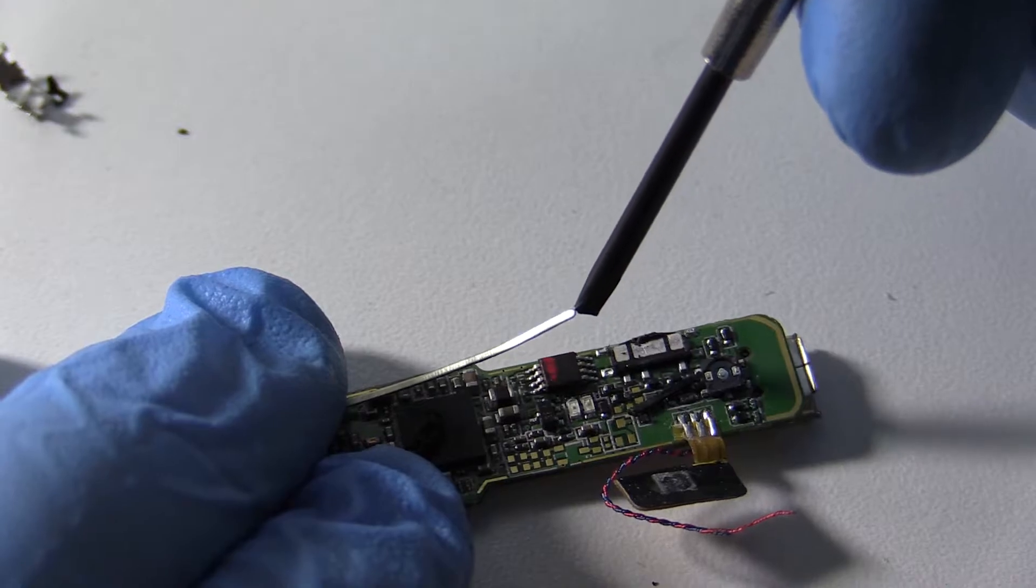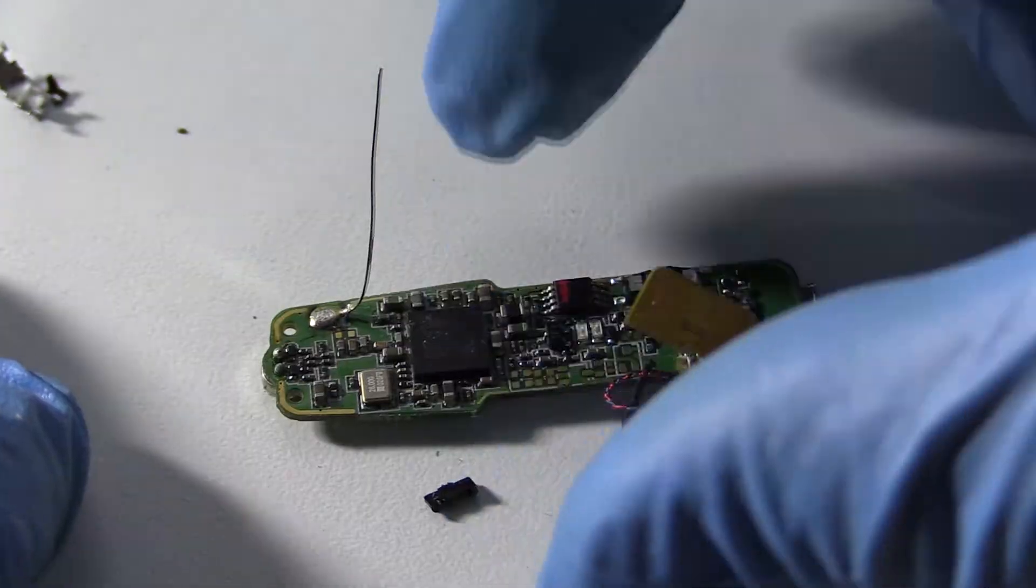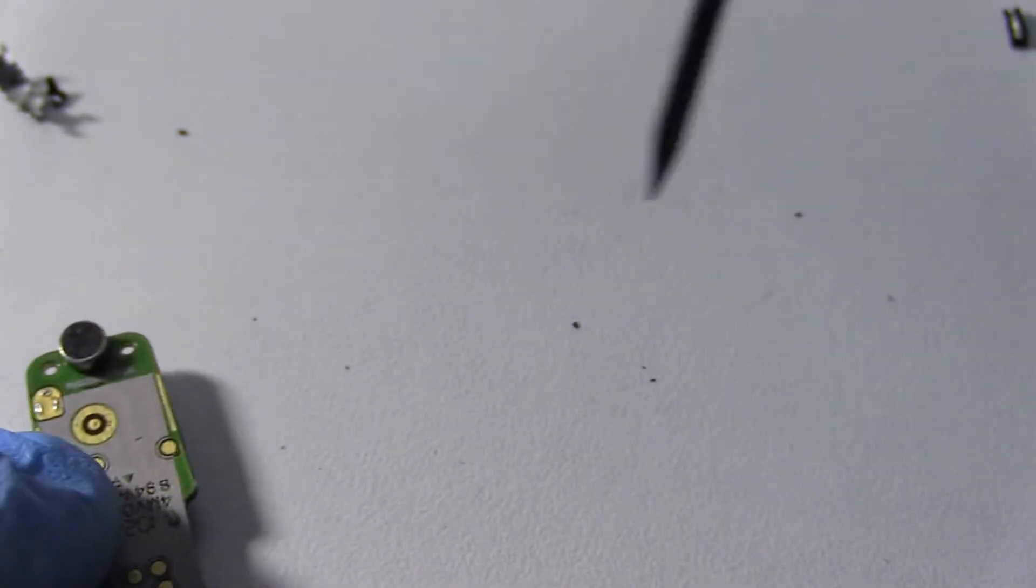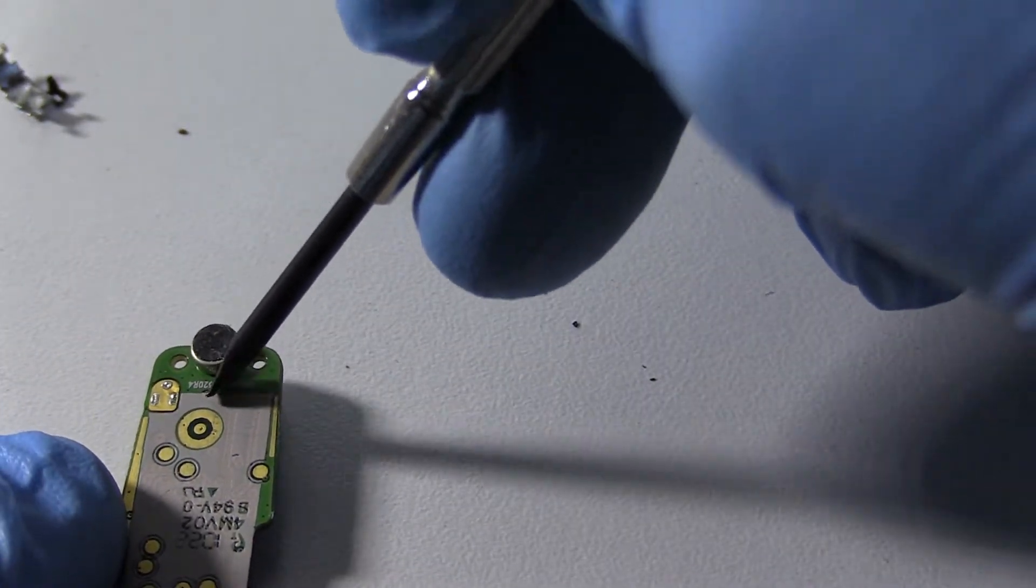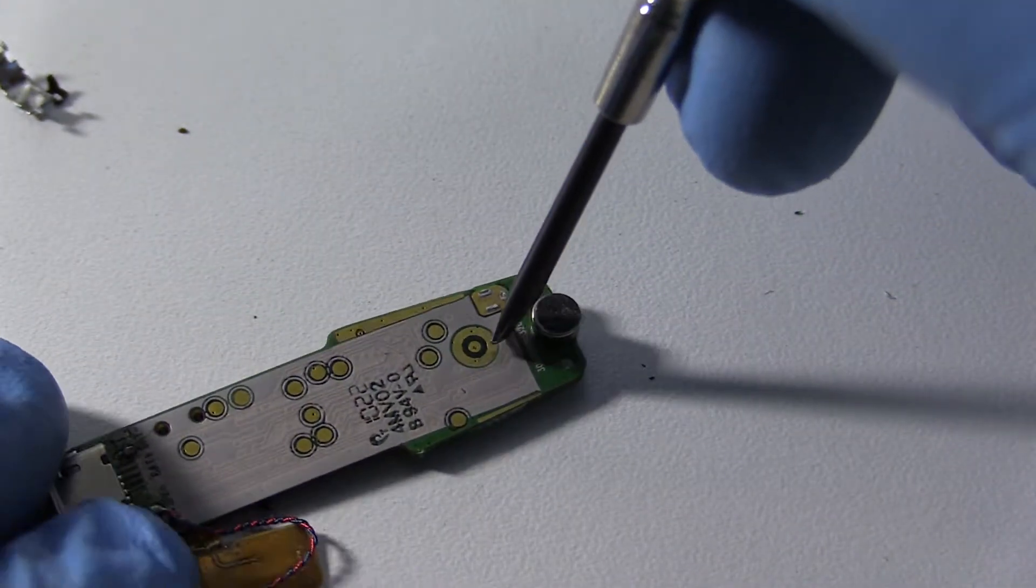Sometimes you'll find plating on antennas. Unfortunately, on this one, it's just tin. Here, you'll find the microphone pretty well worthless.